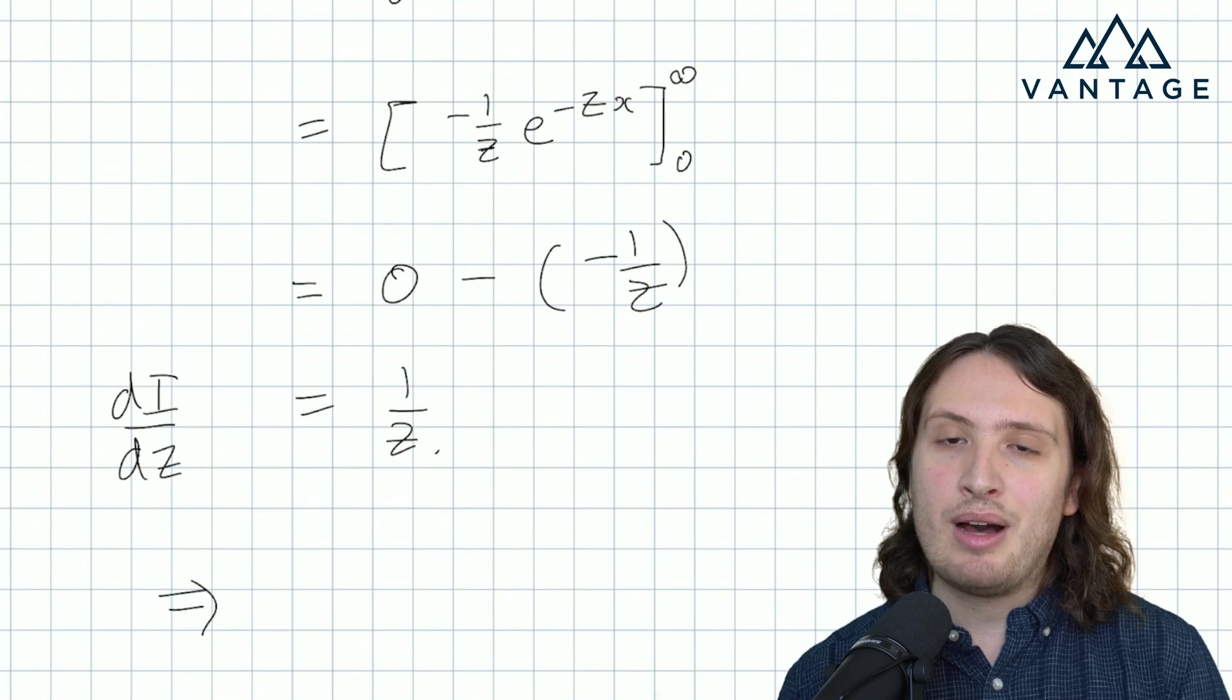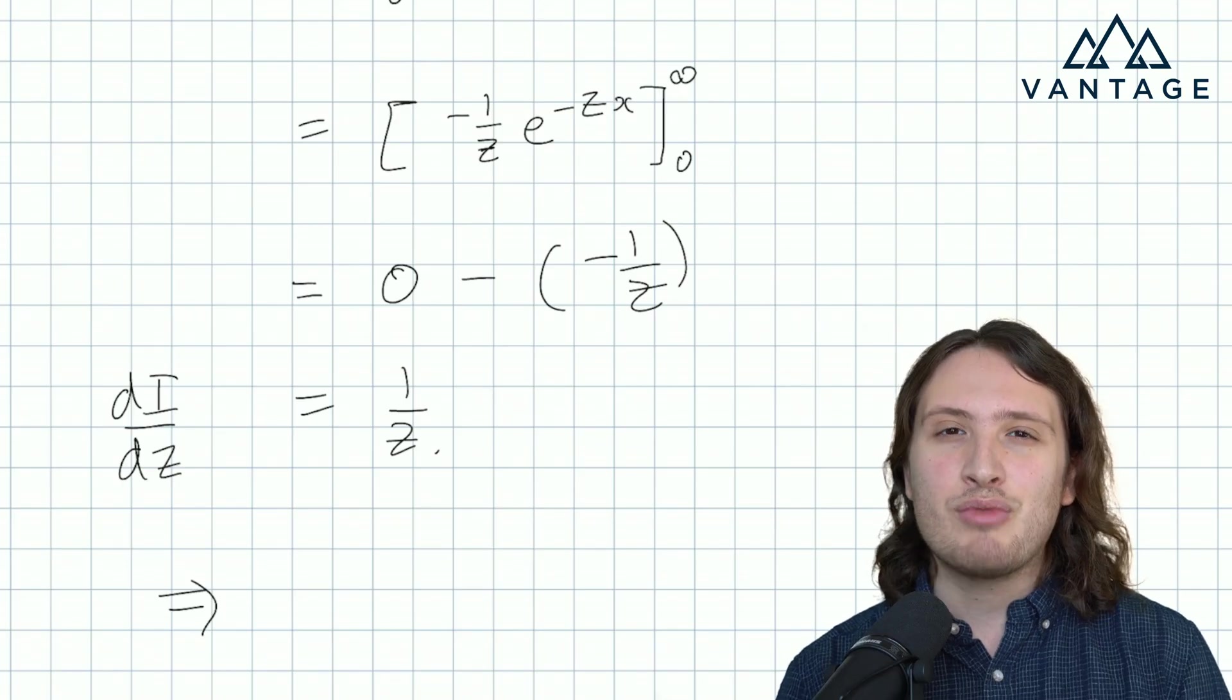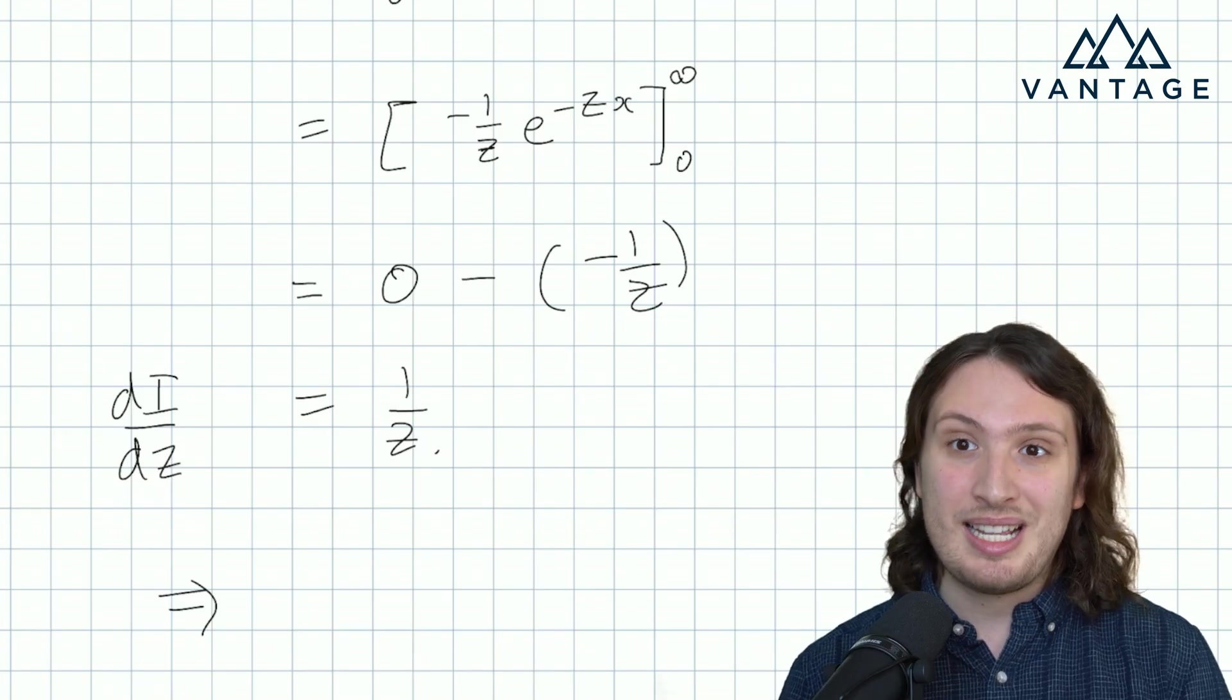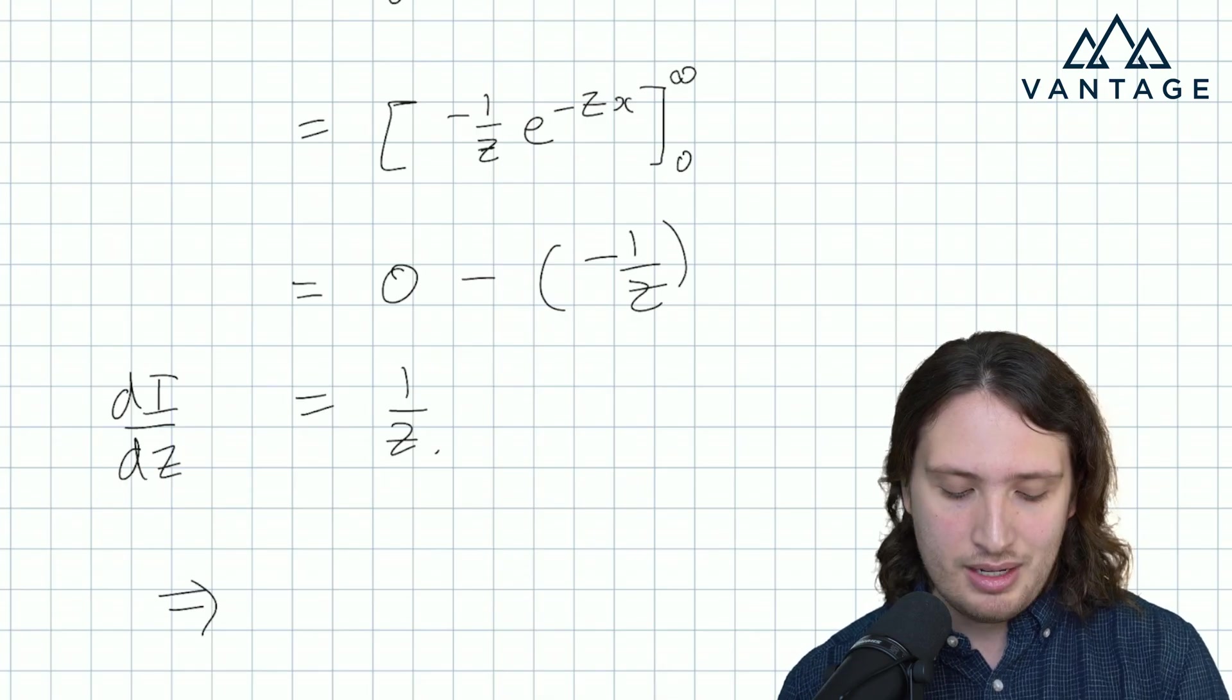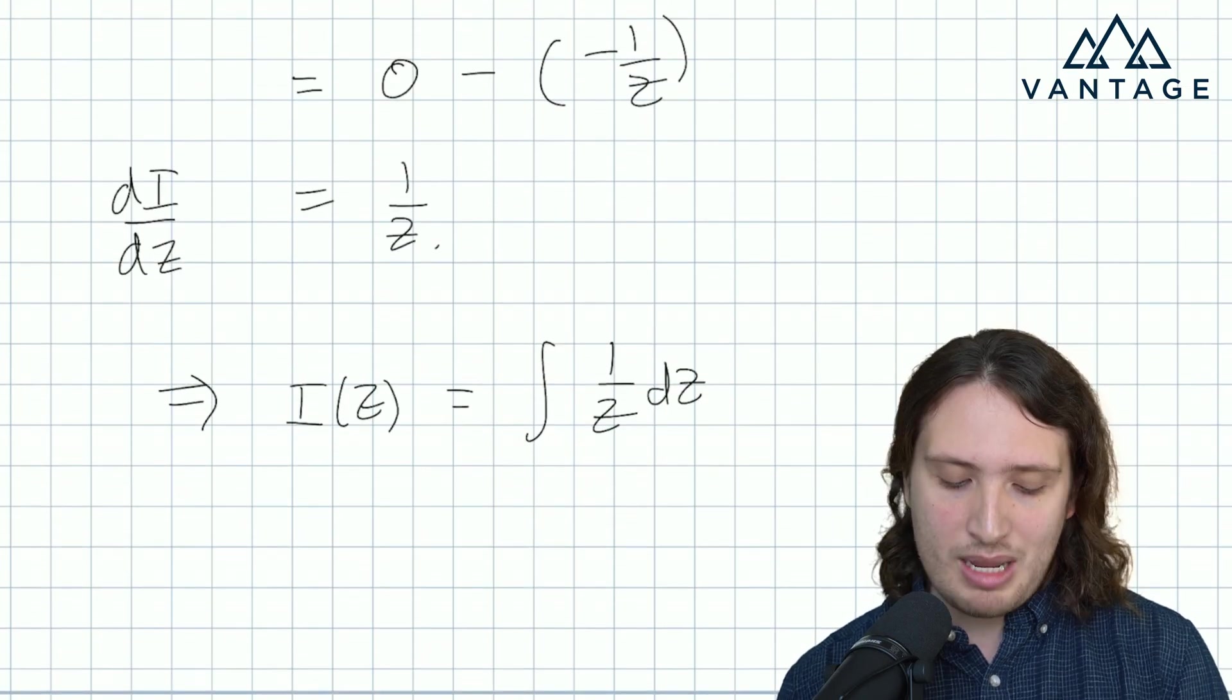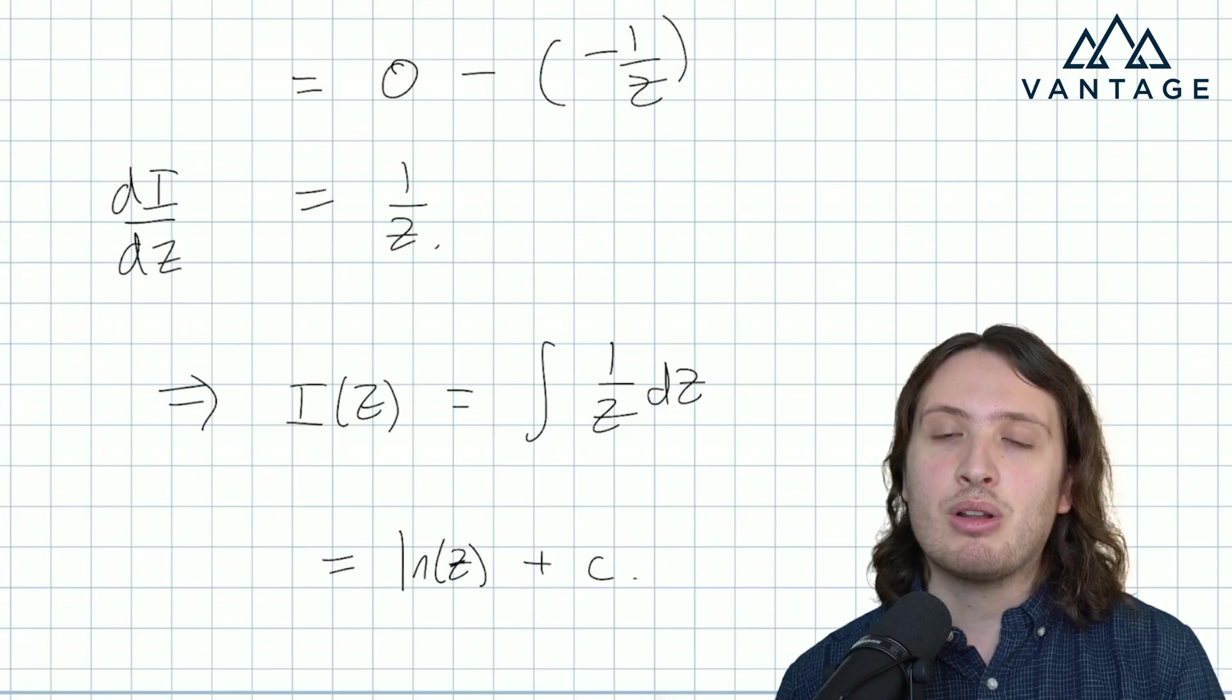Now if I want to learn about what I is, all I need to do is take an integral of this with respect to z to undo that original derivative. So the beauty of this approach is we trade one integral, which we couldn't do, with two integrals. We did the x integral, now we do the z integral, but they're both easy enough. So I of z is therefore the integral one over z dz. That would normally be ln of modulus z, but I'm going to drop the modulus because we know that z is positive. And we have to remember our integration constant plus c.